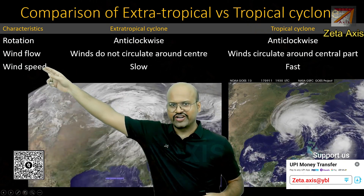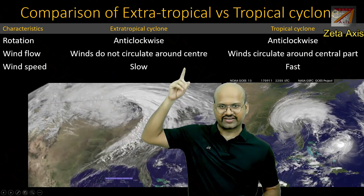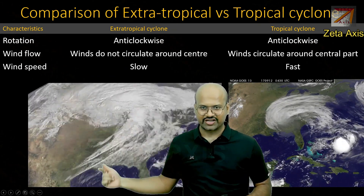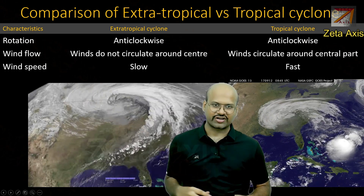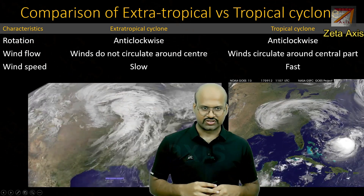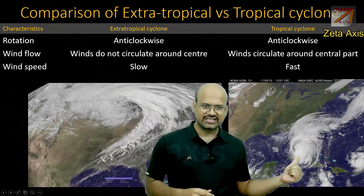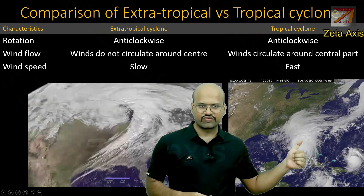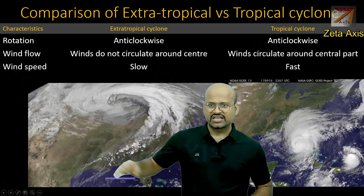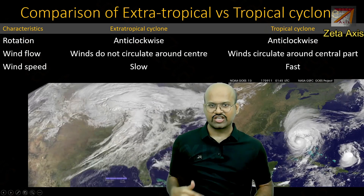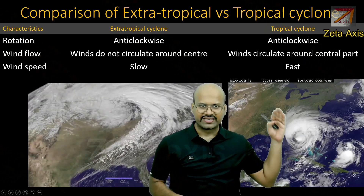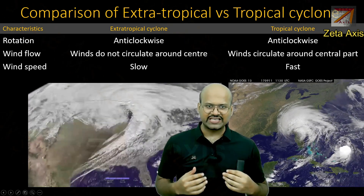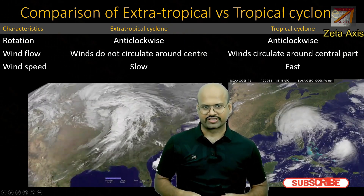Now the direction of wind flow. In the extratropical cyclone, winds do not circulate around the center — they move in a comma shape rather than a strictly circular motion. In the tropical cyclone, the air clearly moves around the center, which is the eye of the cyclone. The wind speed in extratropical cyclones is relatively slow, while in tropical cyclones the velocity is very high and can very easily exceed 100 or 200 kilometers per hour.